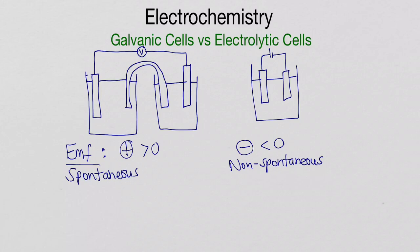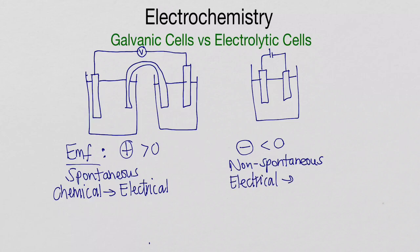The third difference involves energy transformations. In galvanic cells, we start with chemical energy and convert it into electrical energy — that's why we have a voltmeter and not a battery. It's the complete opposite in electrolytic cells: we start with electrical energy and create chemical energy, so it goes the other way around.